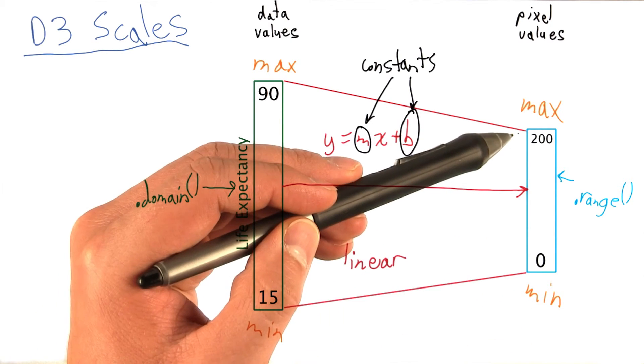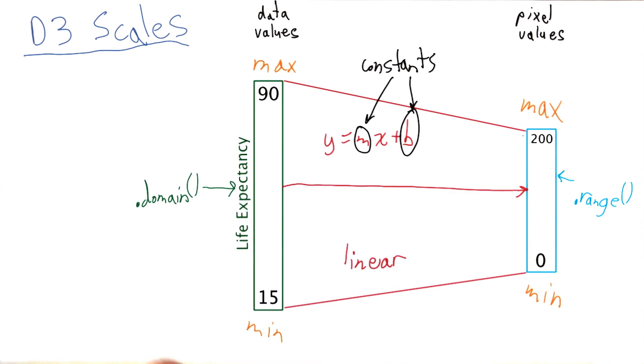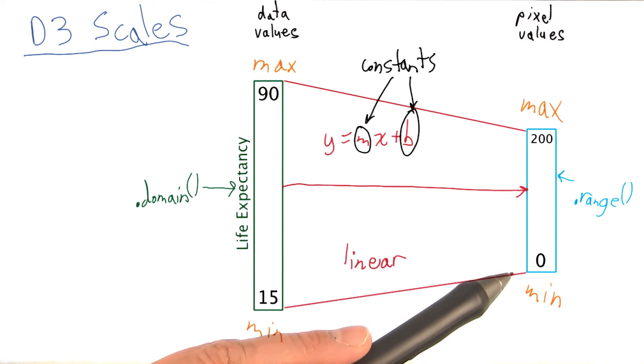In this case, I chose a maximum of 200 pixels, since that's around the size of the box we would be working with on the web page. A minimum range value of 0 does not mean we plot our point in one of the corners of our web page. It's simply an offset from the root SVG element, which we will be working with.